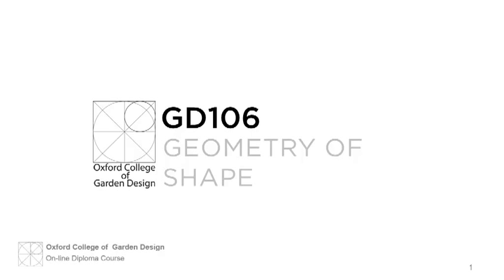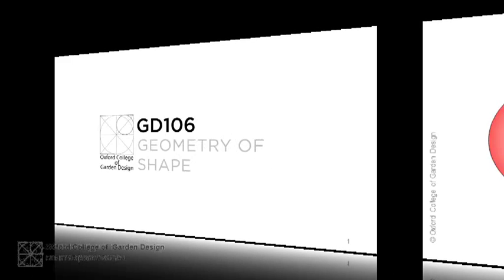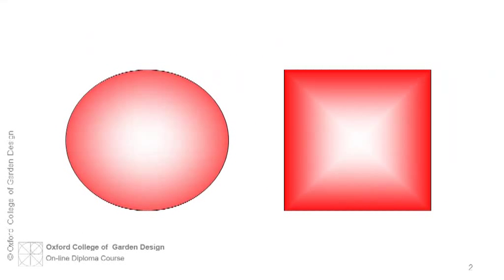GD 106 Geometry of Design with Duncan Heather. It's vital that students understand the principles of geometry as most design originates from two basic shapes, the circle and the square. Both shapes have a number of unique characteristics that influence their role in design.